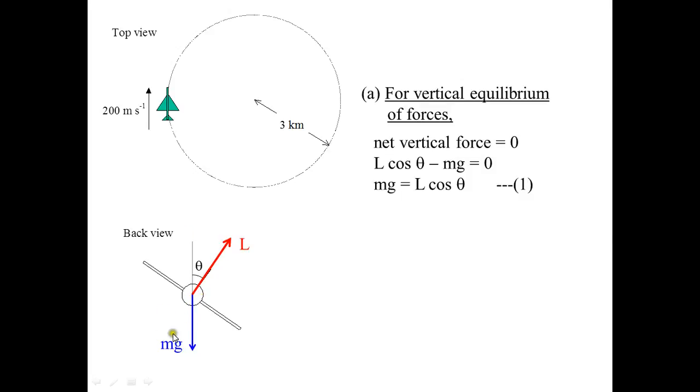We will have net force equals 0, and L cos θ = mg. The downward force must equal the upward force. The upward force in this case will be the component of L, which is L cos θ. With that, we can't obtain theta yet because we do not know what is L. There are two unknowns here: theta and L. The mass of the airplane is given as 2000 kg.